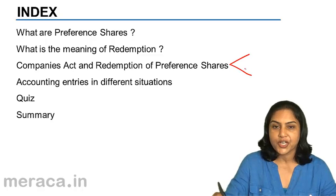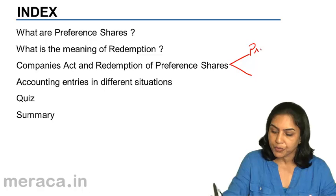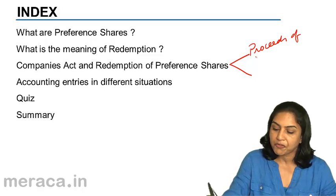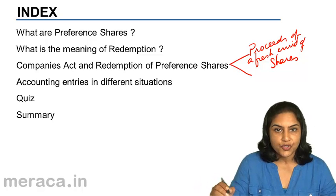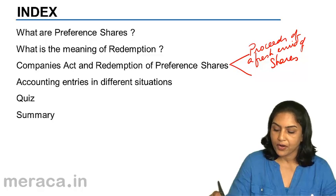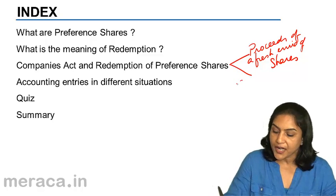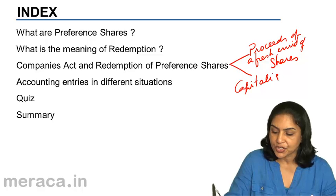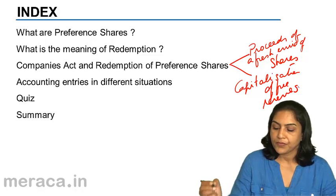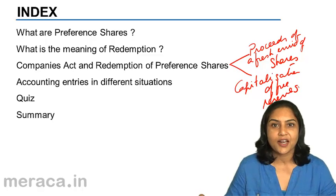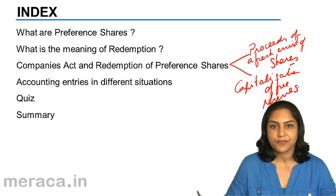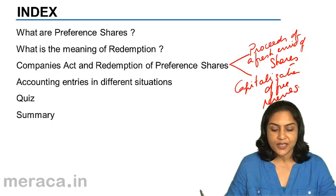Basically, preference shares are redeemed either out of the proceeds of a fresh issue of shares, or out of free reserves which are capitalized — capitalization of free reserves. We will understand the provisions with respect to this, the rationale behind these provisions, and then move on to the accounting entries in the different situations.